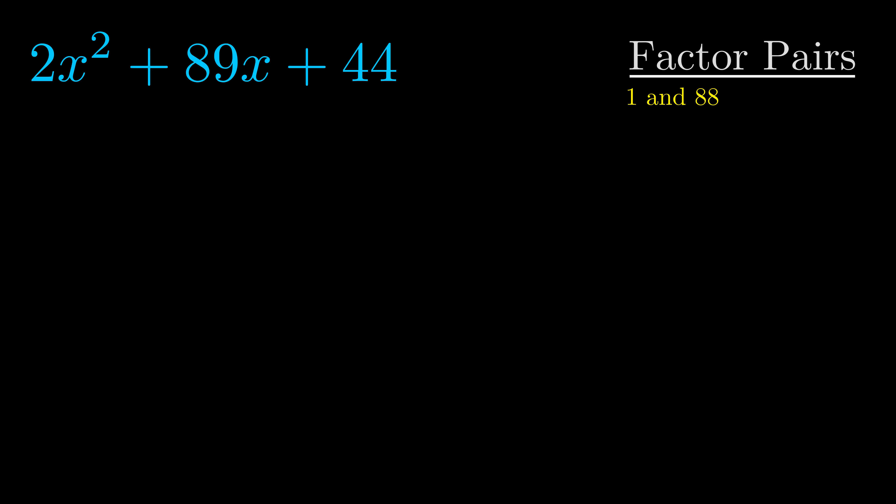Now once we have this factor pair, we want to use it to split up the b value.